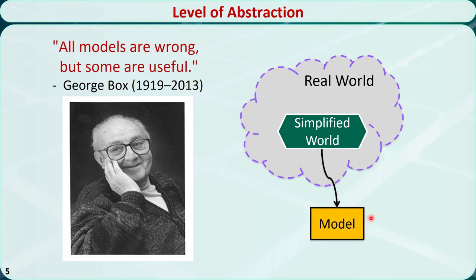Based on this simplified world, we can build a mathematical model to represent it. Because our original intention was to use a model to represent the real world, and this model can only capture a subset of the characteristics of the real world, the model is wrong. However, if we only care about a specific aspect of the real world and the simplified world has contained the most important information of this aspect, and the parameters do not change much if we are dealing with the short-term characteristics of the world, then we can still use the model to approximate the real world and make useful decisions. In this regard, the model is useful.